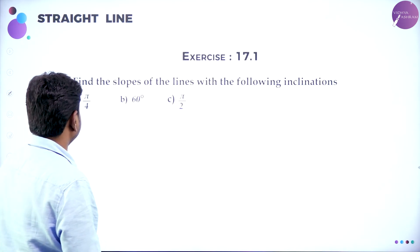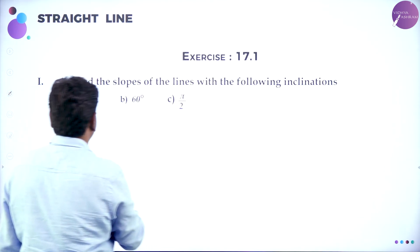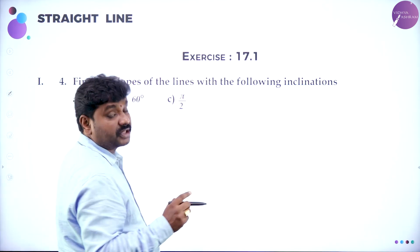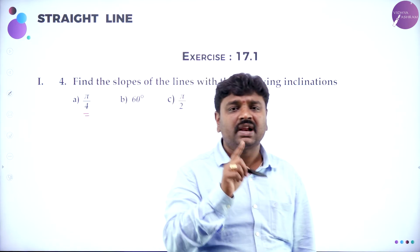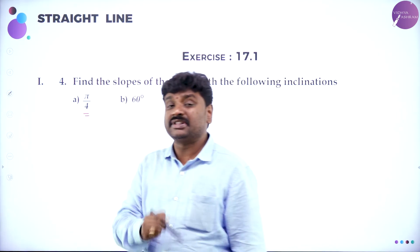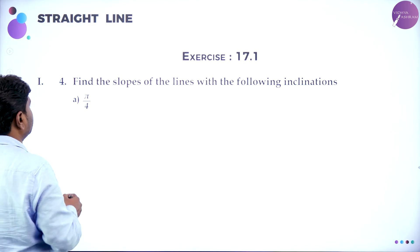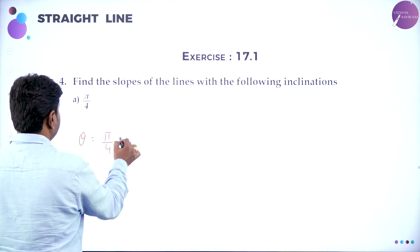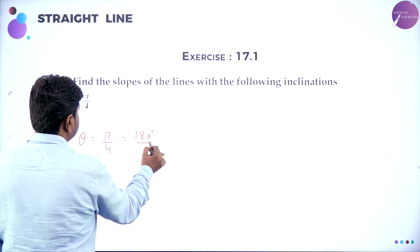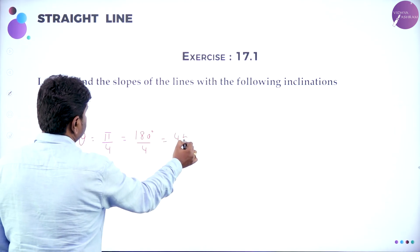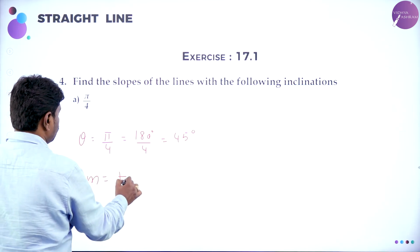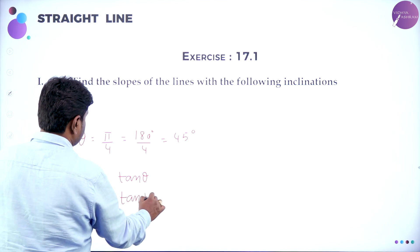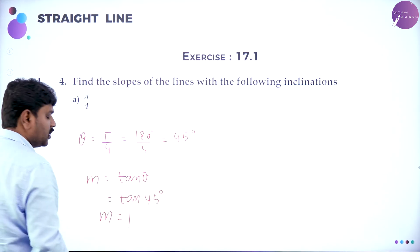Find the slope of lines with the following inclinations. Inclination means angle made by the line with X-axis. First, theta is given as pi by 4. Pi by 4 means 180 degrees divided by 4, that is 45 degrees. Slope formula M is equal to tan theta, so M is equal to tan 45, which is 1. Second, theta is given as 60 degrees. M is tan 60 degrees, which is root 3. Slope of the line is root 3.